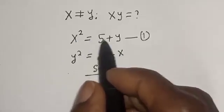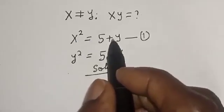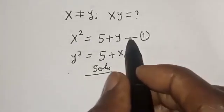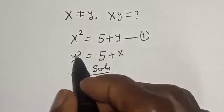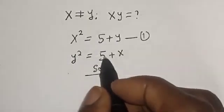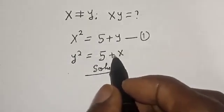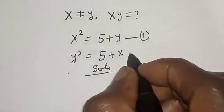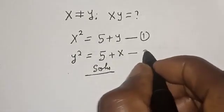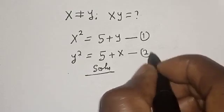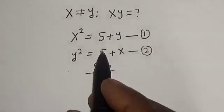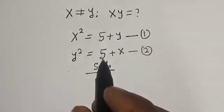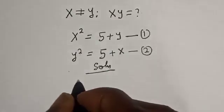x squared is equal to 5 plus y — let's call this equation 1. y squared is equal to 5 plus x — let's call this equation 2. Now let's subtract equation 1 from equation 2.